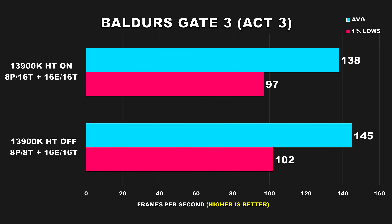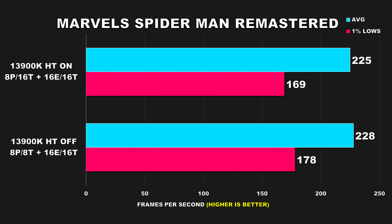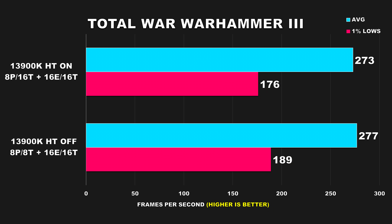If you're looking to get every frame possible in Baldur's Gate 3, it might be worth turning hyper-threading off for a bit of a boost. Hogwarts Legacy also shows a performance boost when disabling hyper-threading on the P-cores — again not drastic, about 4% for average FPS and 6% for 1% lows. Marvel's Spider-Man Remastered really didn't care if hyper-threading was enabled or disabled; both results are very similar. In Total War: Warhammer 3, while average FPS barely changes, the 1% lows are better by 7% when hyper-threading is disabled.